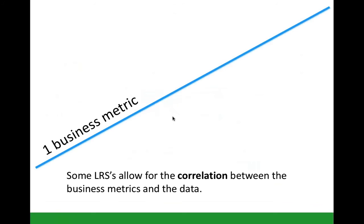Some learning record stores allow business metrics to be added, and reporting allows a correlation — so if you've got this many completions in an area, what is that business metric doing? An elegant idea I've heard is that sometimes the challenge is just finding the business metrics. I encourage you to work with whoever does your reporting to find what business metrics are being recorded, which ones could be linked to L&D programs, and then only try to choose one metric you're affecting — rather than claiming you're affecting all of them, which gets into that complicated-to-measure territory.